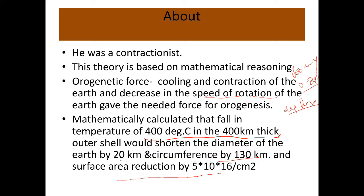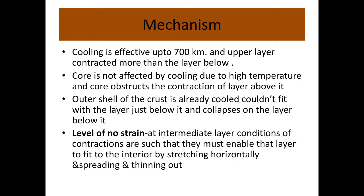He used many calculations to explain the speed of rotation as well as the fall in temperature at different shells or layers of the earth. Regarding the mechanism of the theory, cooling is effective up to 700 kilometers, which is up to the upper mantle. The upper layer contracted more than the layer below, so the crust contracted more than the mantle.